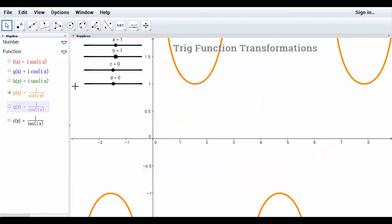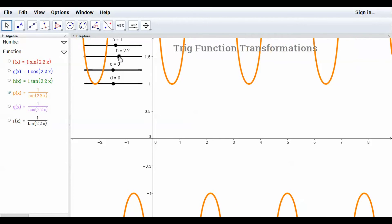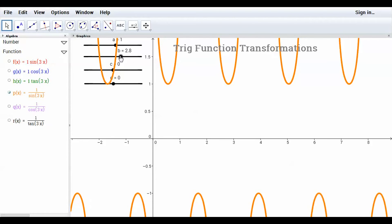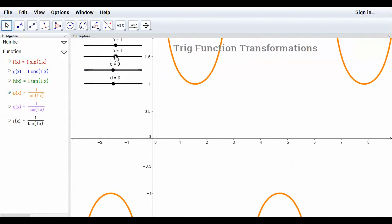Do one more here for period. Change the B value. The bigger the B value, the quicker the graphs repeat themselves. The smaller the B value, if it's a fraction, the longer it takes to repeat itself.